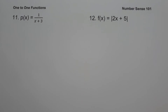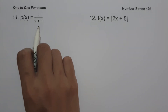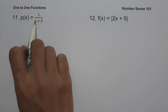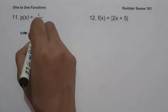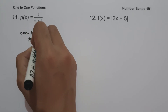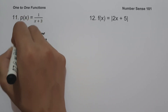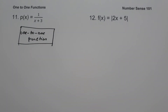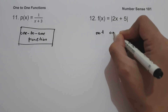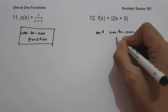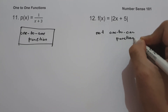On number eleven, we have p(x) = 1/(x + 3). This is a rational function, but the highest exponent is still an odd number, so this is a one-to-one function. On number twelve, we have f(x) = |2x + 5|. Since we have an absolute value, this function is not one-to-one.